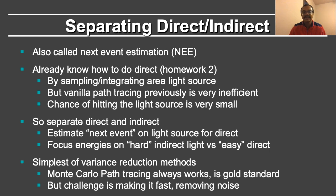The chance of actually hitting the light by extending paths from the eye is very small. So simply separate the direct and indirect: estimate the next event corresponding to the light source for direct, and focus the energies on the hard part in path tracing, which is computing the indirect light or the global illumination. This is the simplest of the variance reduction methods. Recall that Monte Carlo path tracing always works and is the gold standard for rendering, but the challenge is to make it fast and remove the noise or variance.